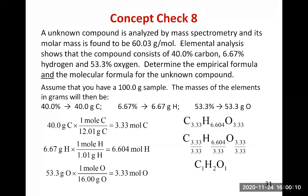For hydrogen, 6.604 divided by 3.33 comes down to 2. So the formula is C₁H₂O₁, which is written as CH₂O — the empirical formula.